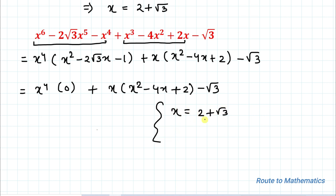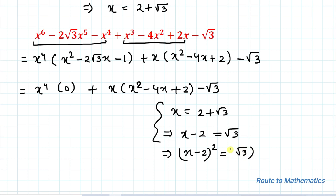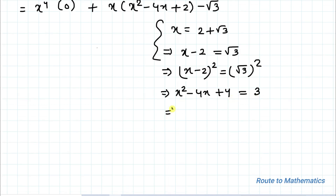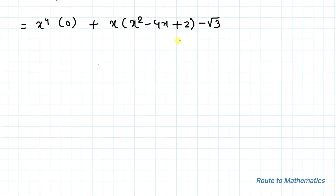Again, using x = 2 + √3, let's take 2 to the left-hand side: x minus 2 equals √3. Squaring both sides: (x minus 2)² = x² minus 4x plus 4 equals 3. Taking 3 to the left-hand side gives x² minus 4x plus 1 equals 0.